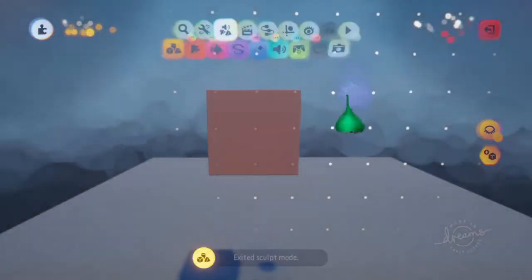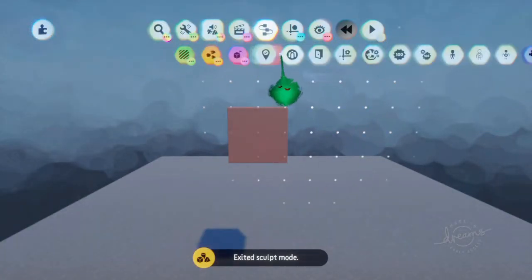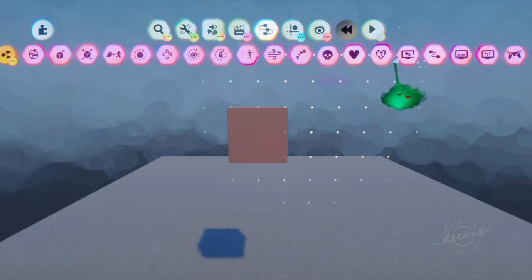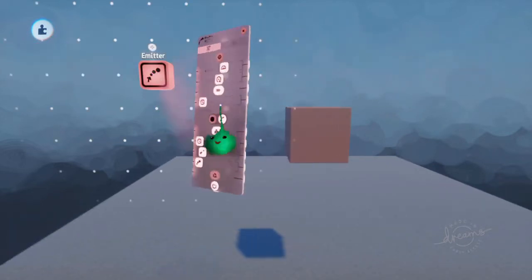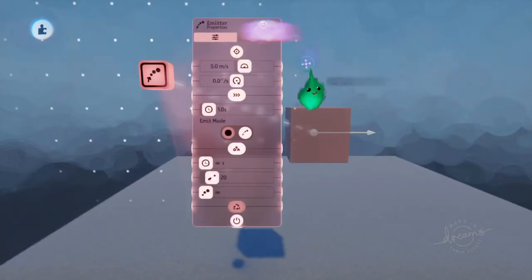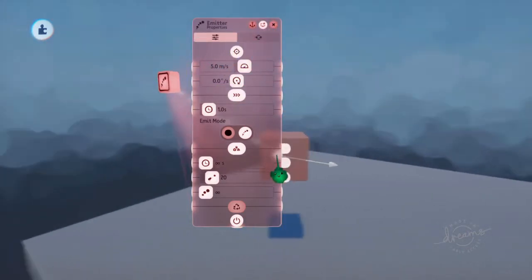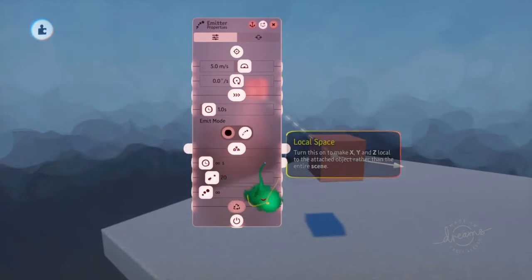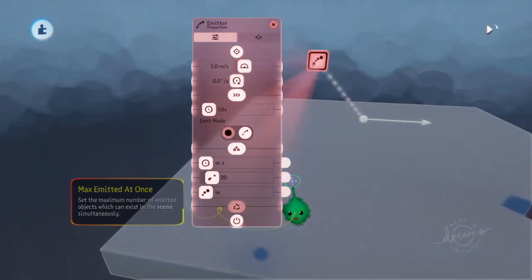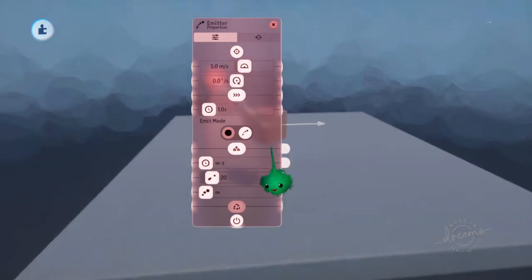Let's make a sculpt and emit it using an emitter. Link it like that. It's throwing out boxes, which is cool.